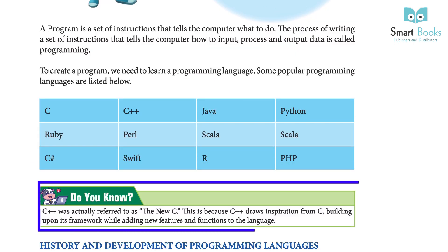A program is a set of instructions that tells the computer what to do. The process of writing a set of instructions that tells the computer how to input, process, and output data is called programming. To create a program, we need to learn a programming language. Did you know? C++ was actually referred to as 'the new C' because C++ drew inspiration from C, building upon its framework while adding new features and functions.